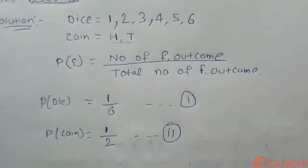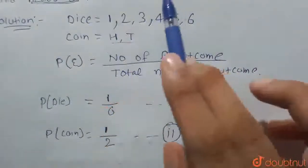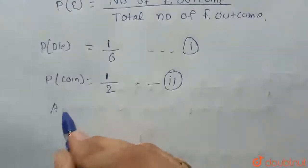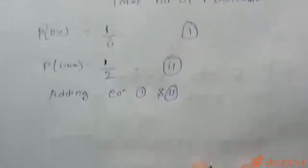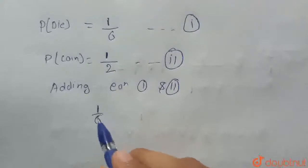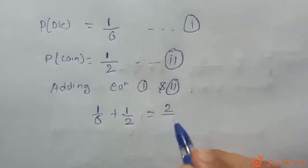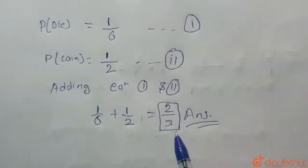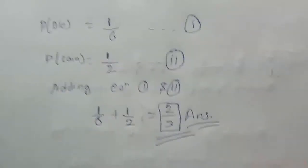So what we do is add equation 1 and equation 2 to find the probability that either the die will come 2 or 3 or the coin will land heads up. Adding equation 1 and 2, we get 1/6 plus 1/2, which is equal to 2/3. So 2 upon 3 is our answer — that is the probability that either the die will come 2 or 3 or the coin will land heads up. Thank you so much for watching this video.